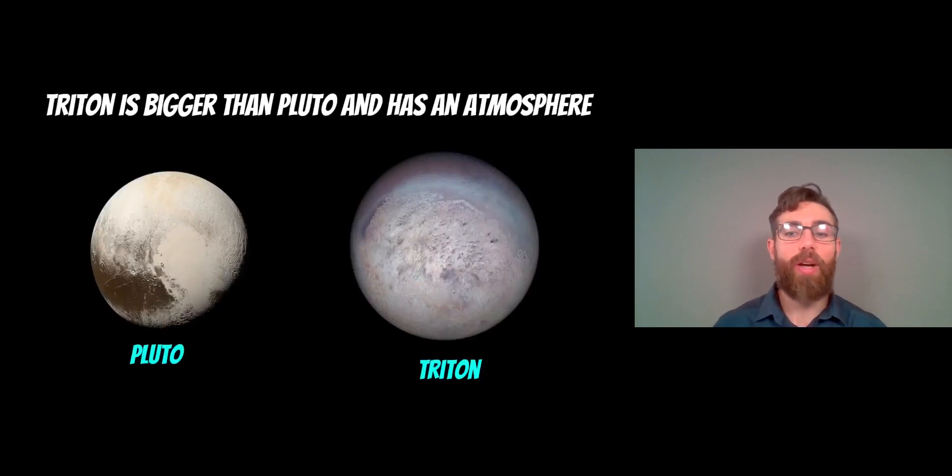Now, this is where it gets quite interesting for Triton. Triton is actually bigger than Pluto. It has an atmosphere. I say that Triton is bigger than Pluto, but they are relatively similar in size. Triton is a little bit bigger. But they both have atmospheres, and they are both almost exactly the same composition. So they're almost the same object. They've formed in the same location. They're made of the same thing. They're almost the same size. So this is where it gets quite interesting.